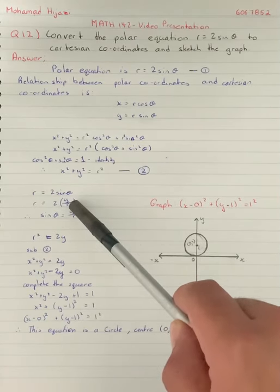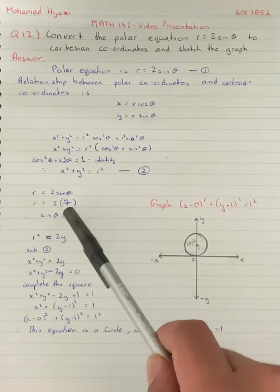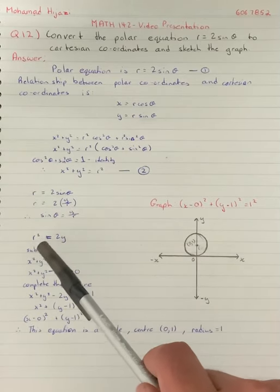Going back to our equation, we can multiply both sides by r to get r² = 2y.